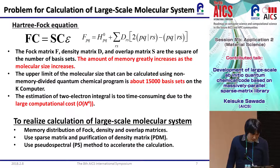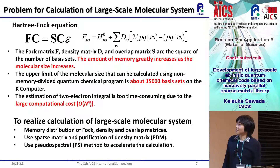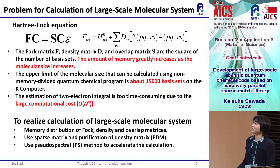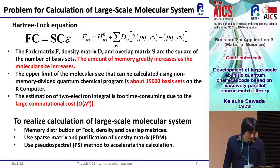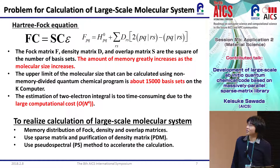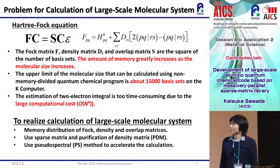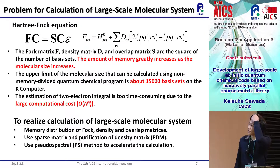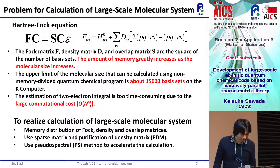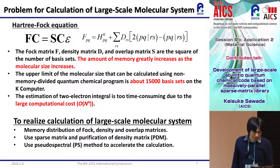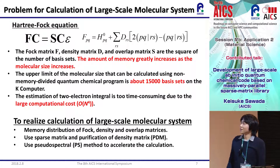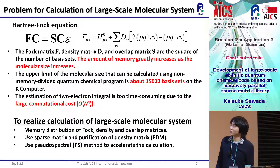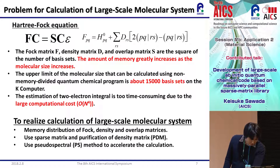There are several problems. The biggest problem is memory size: the size of the Fock, density, and overlap matrices are the square of the number of basis sets. Therefore, the amount of memory greatly increases as molecular size increases. The upper limit of molecular size calculable using a non-distributed code is about 15,000 basis sets on the K-computer. The next problem is the too-large computational cost, as the estimation of two-electron integrals is very time-consuming.